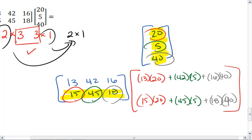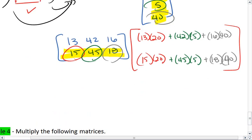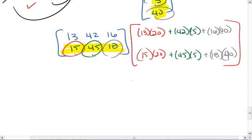Okay, this gives us, we can then simplify. 13 times 20 is going to give us 260, plus 42 times 5 is going to give us 210, plus 16 times 40, which is 640.